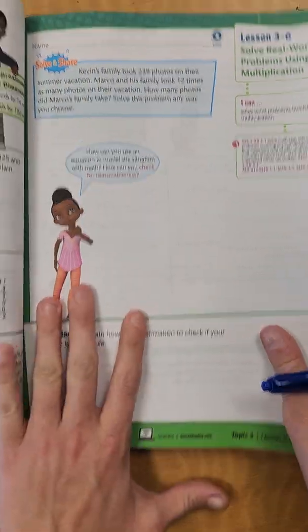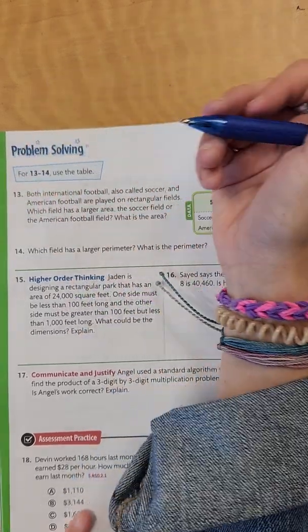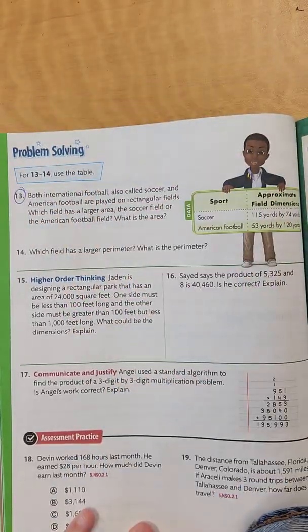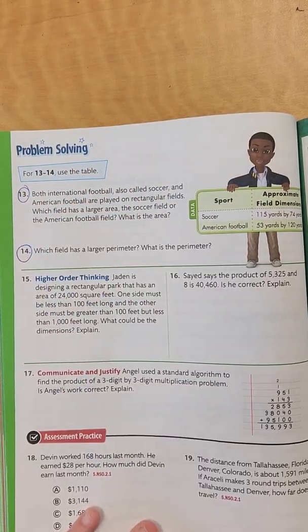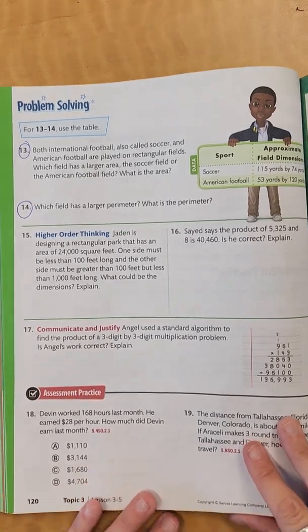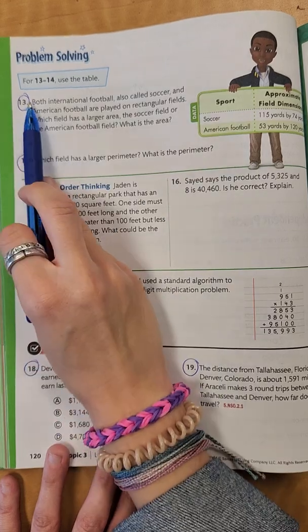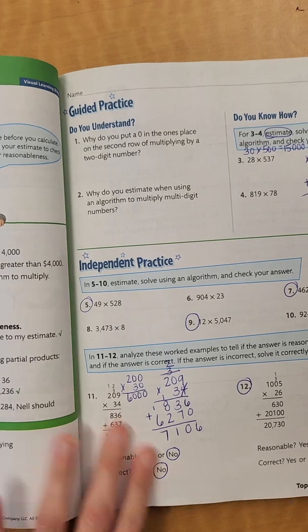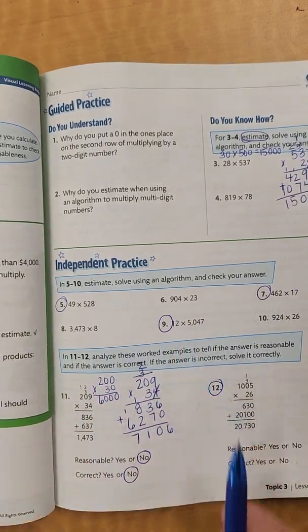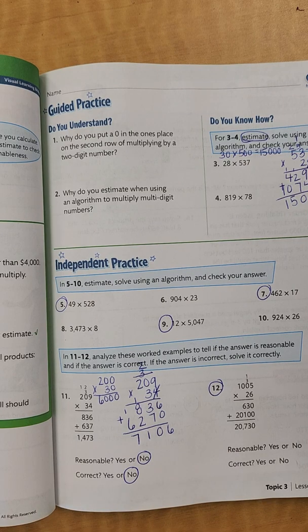So let's flip to the back. I want you to do 13 and 14, and then let's skip on down to 18 and 19. So on the back, you're going to do 13, 14, 18, 19. And then back to the front, you're going to do 5, 7, 9, and 12. So I'm not making you do a whole lot, but just make sure your answers are making sense and that they are reasonable. Good luck, guys.